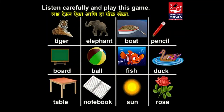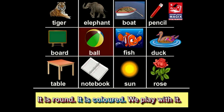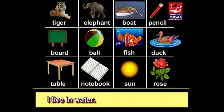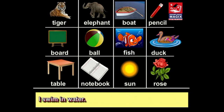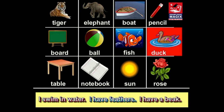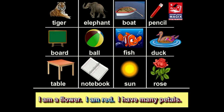Now listen carefully and play this game. Each person picks one object and describes it in three sentences, and the group must identify the object. It is round. It is colored. We play with it. — Ball. I live in water. I swim. People eat me. — Fish. I swim in water. I have feathers. I have a beak. — Duck. I am a flower. I am red. I have many petals. — Rose.